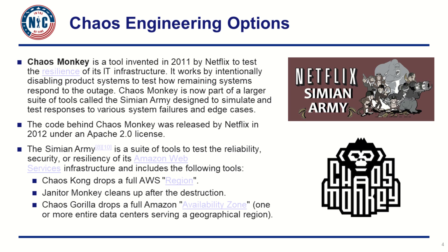So that's great, but what are your chaos engineering options? First, there is Chaos Monkey, the tool invented in 2011 by Netflix to test the resiliency of its IT infrastructure. The concept is to disable production systems to test how the remaining system responds to that outage. Chaos Monkey is part of a larger suite of tools called the Simian Army, designed to simulate and test responses to various system failures and edge cases. The code behind Chaos Monkey was released by Netflix in 2012 as open source. The Simian Army has a broader set of tools — for example, Chaos Kong drops a full Amazon region, Chaos Gorilla drops a full Amazon availability zone, and Janitor Monkey cleans up after the destruction.